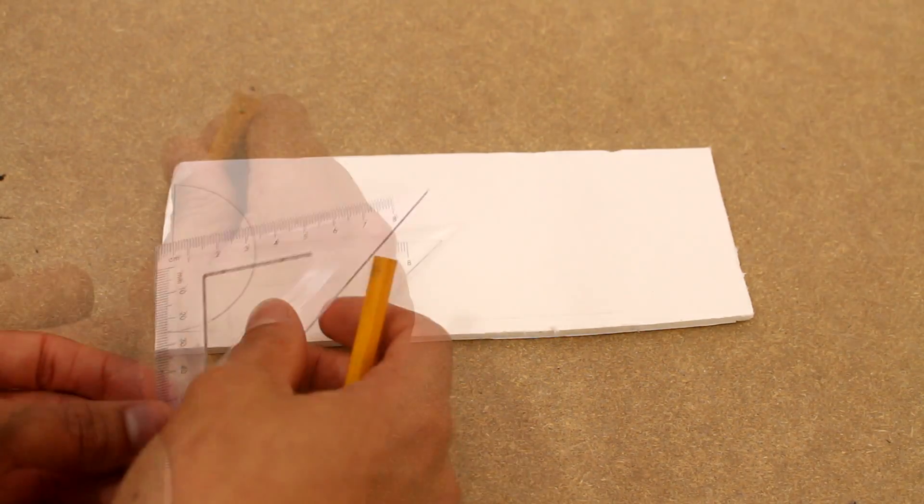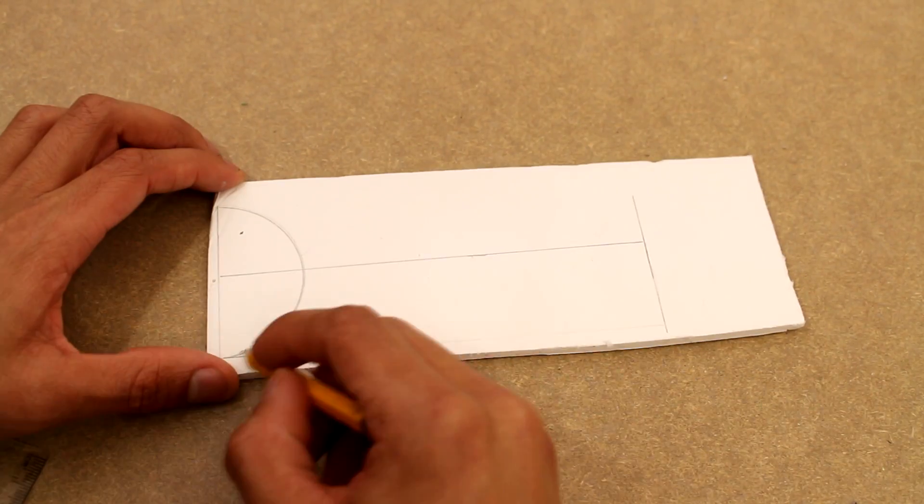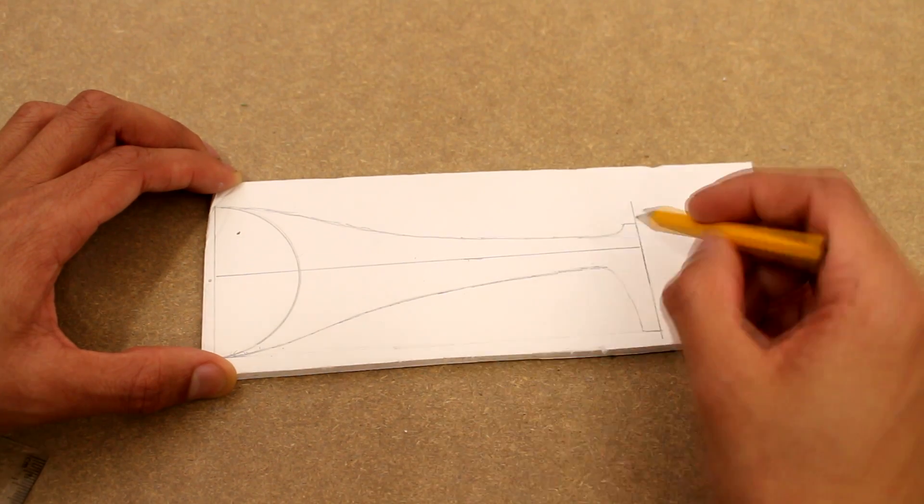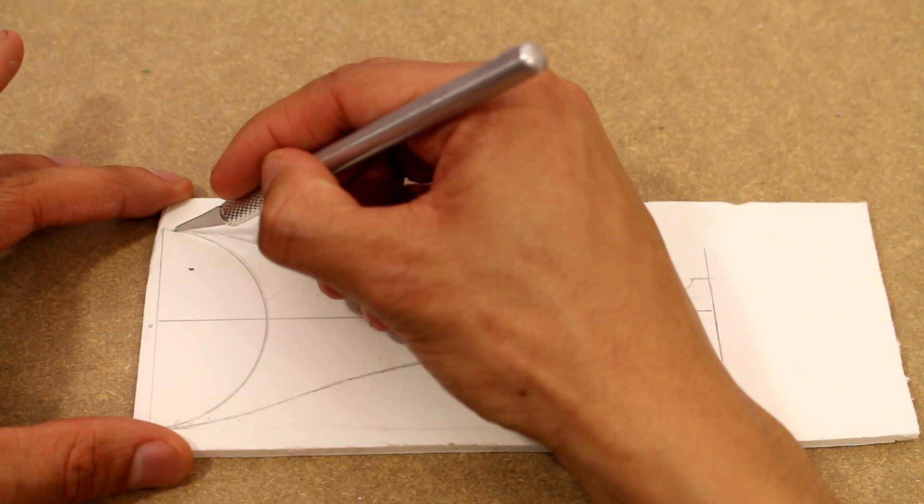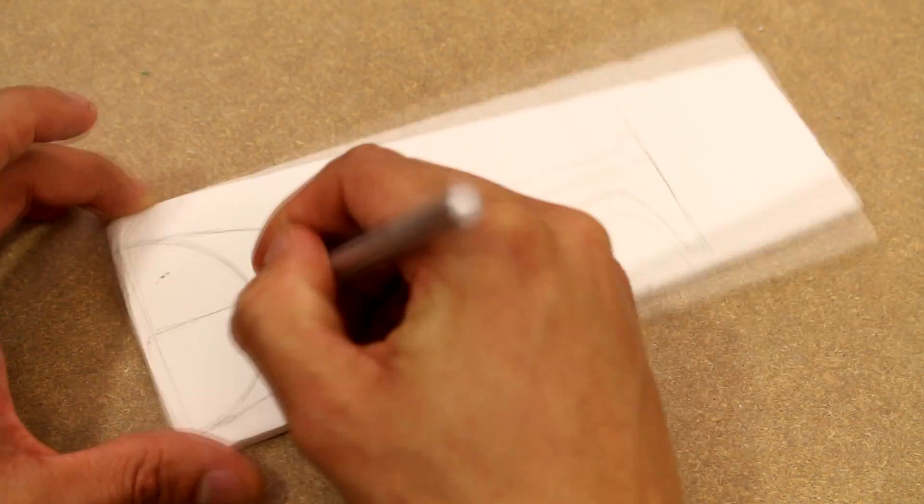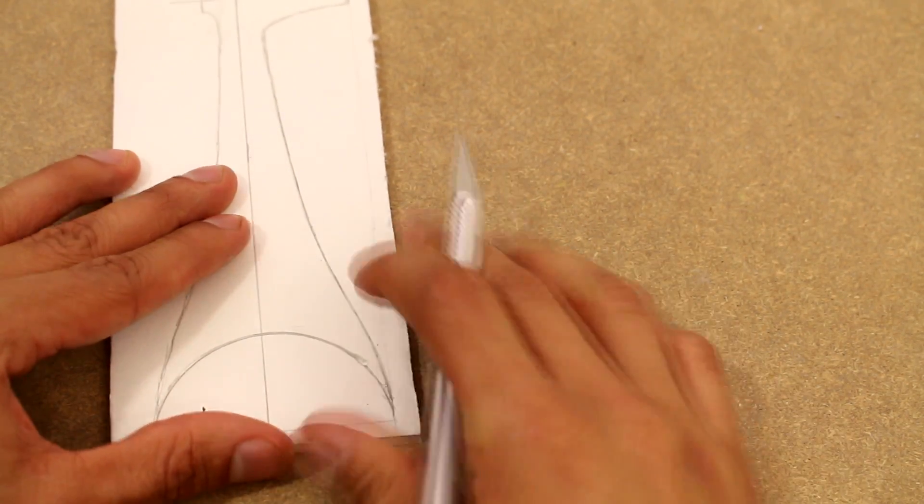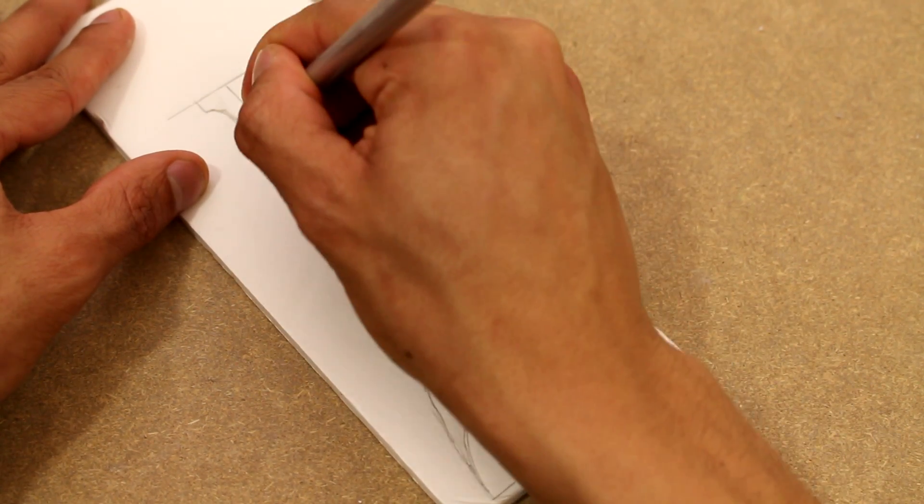I'm going to start off by drawing up the shape of the arms for our quadcopter. These arms, or wings, whatever you want to call them, we're going to have the motors mounted onto the ends of them. So I go ahead and trace out one on foam board, and once I have that done, I'm going to replicate it and do three more that are exactly the same.